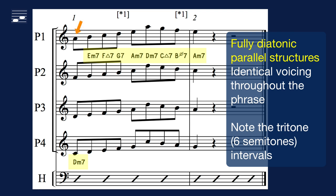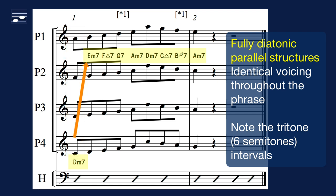The first note A in the lead is chordal function 5. We use a closed position voicing of the D minor 7 chord, and set this in diatonic parallel throughout the phrase, as indicated by the intermediate chords below the top staff. All chords are diatonic in C major. This yields two cases of a tritone interval.